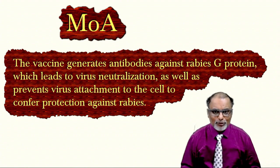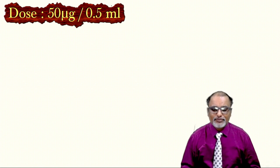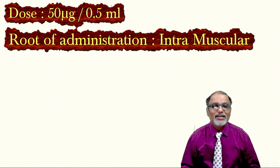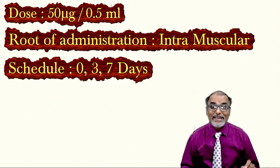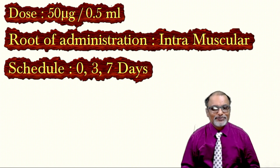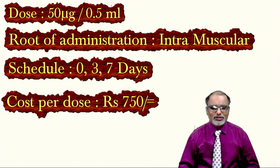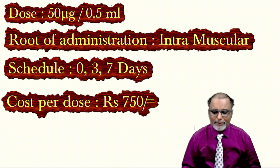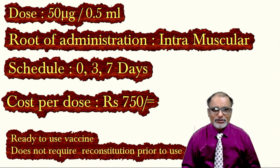The vaccine is 50 micrograms per 0.5 ml per dose. The route of administration is intramuscular. We have three doses at day zero, three, and seven — just one week. The cost per dose is around 750 rupees, and the total cost is around 2050 rupees. It is a ready-to-use vaccine — no need to reconstitute prior to use.